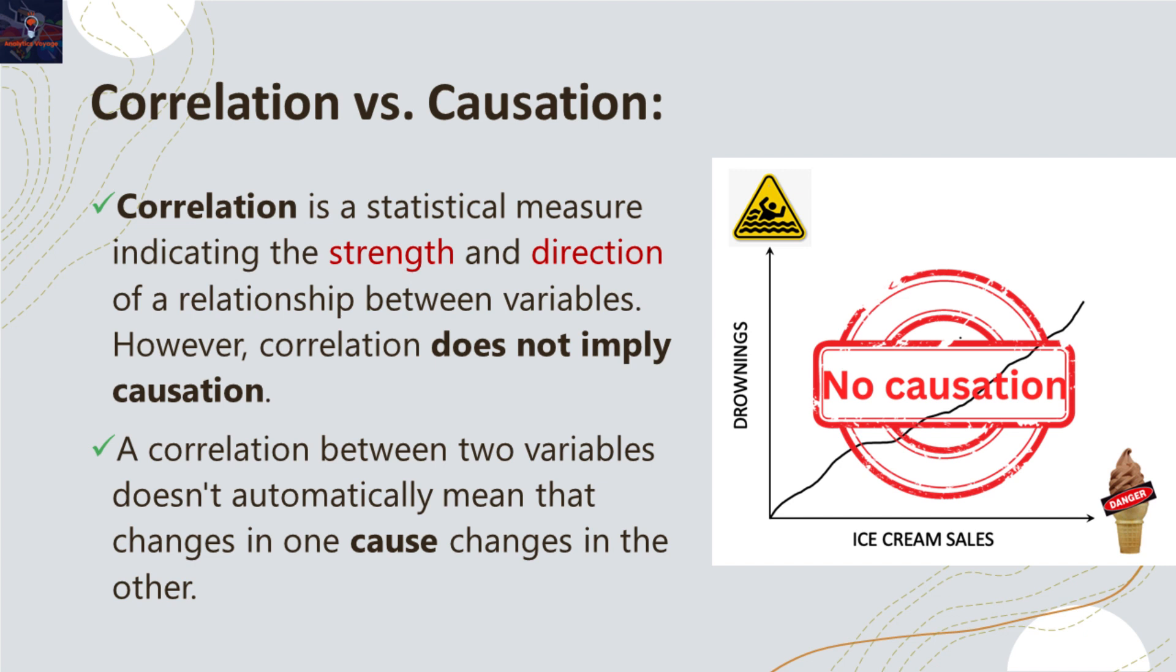Another example, imagine analyzing the correlation between employee engagement and company profits. A positive correlation doesn't mean employee engagement directly causes higher profits. Other factors like market condition, strategy, or product quality can also influence the profits.